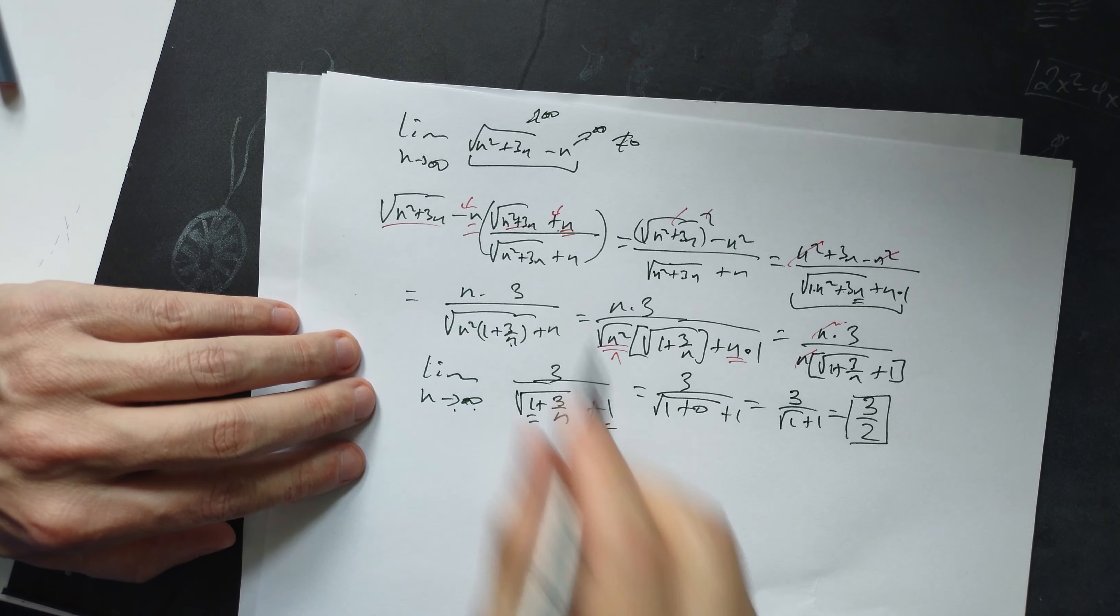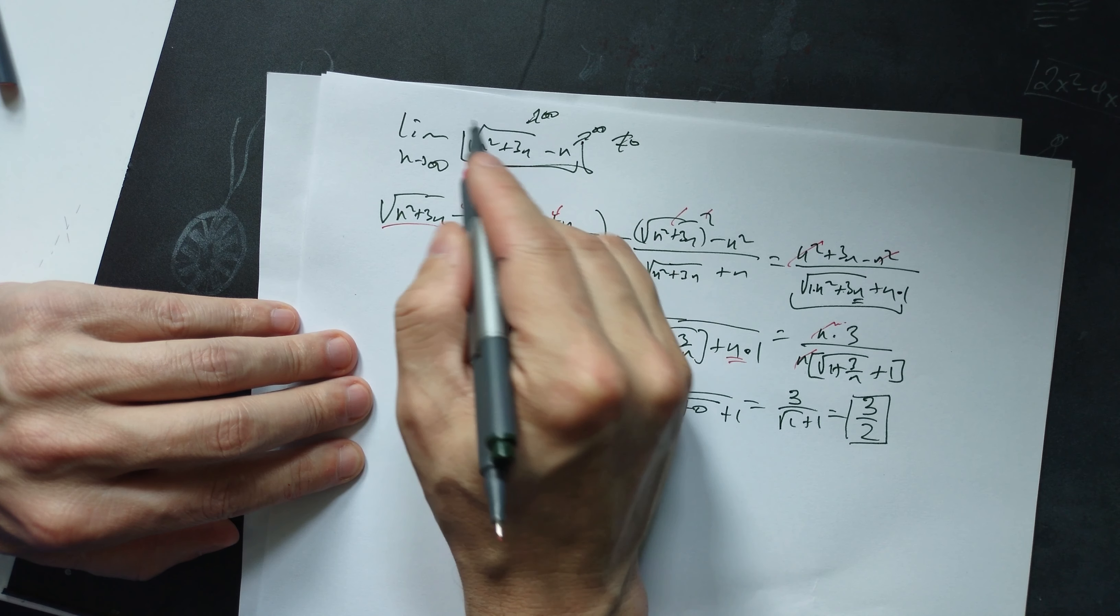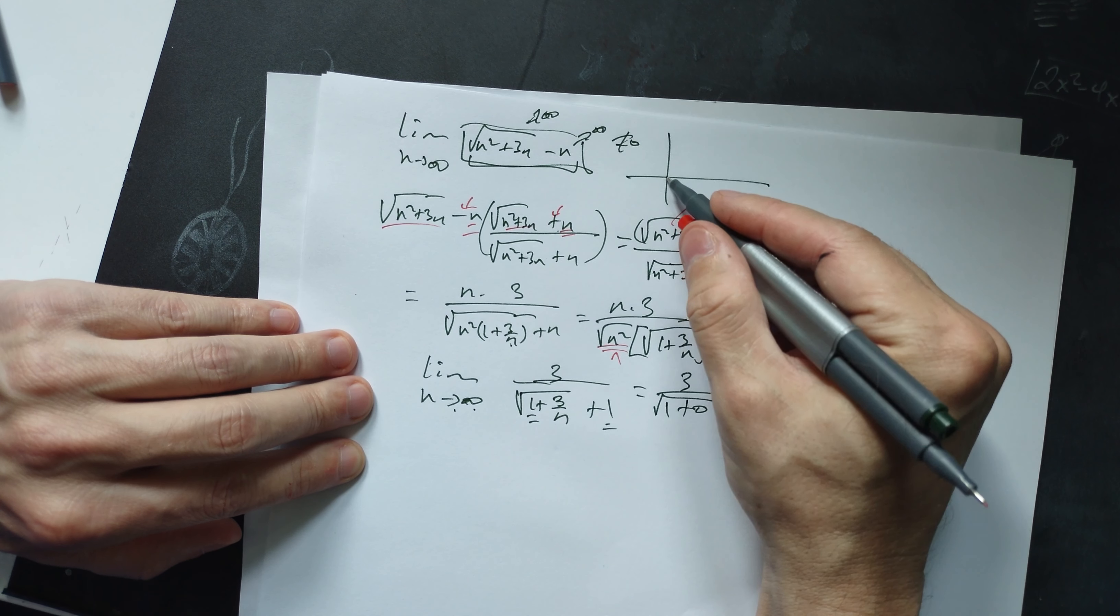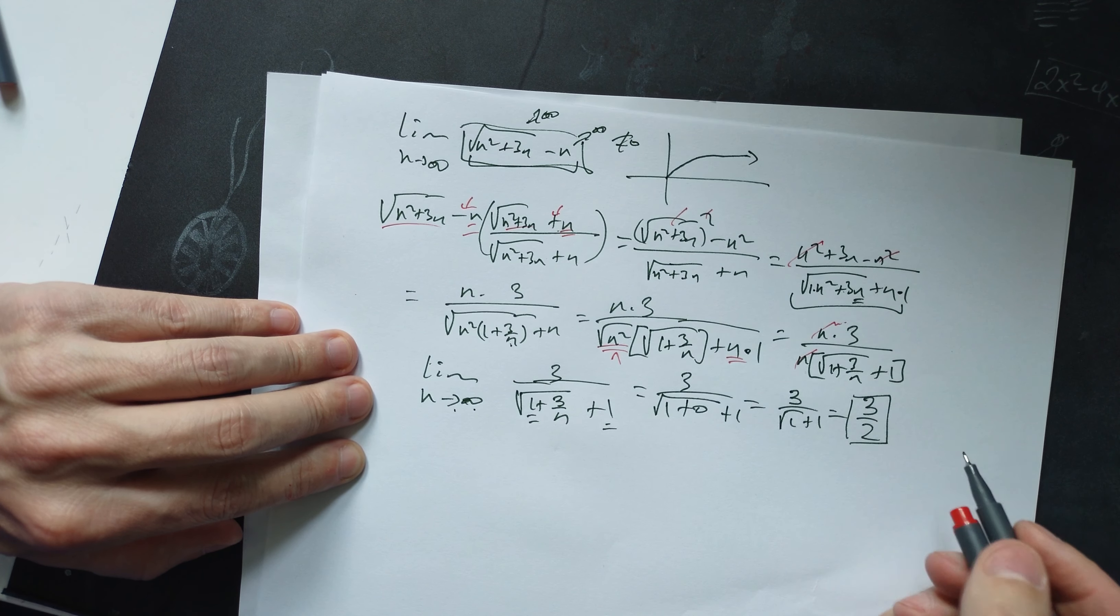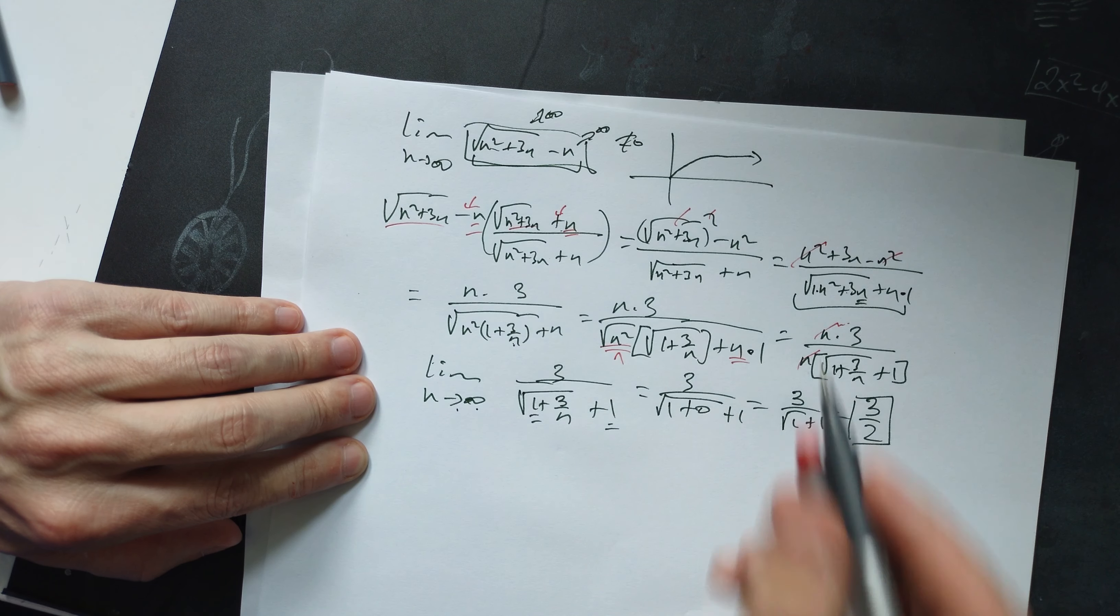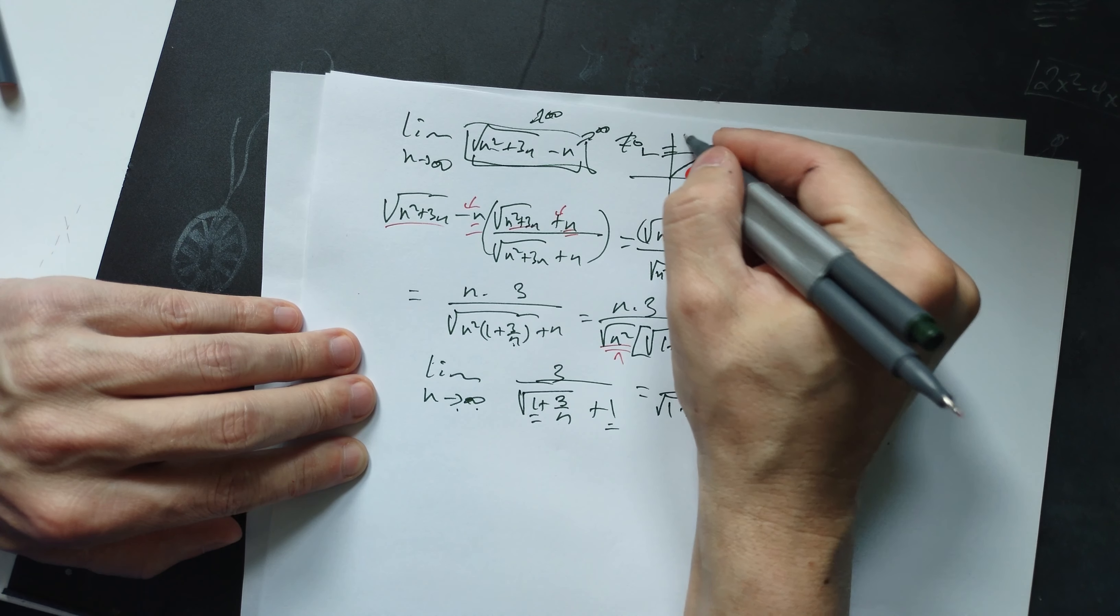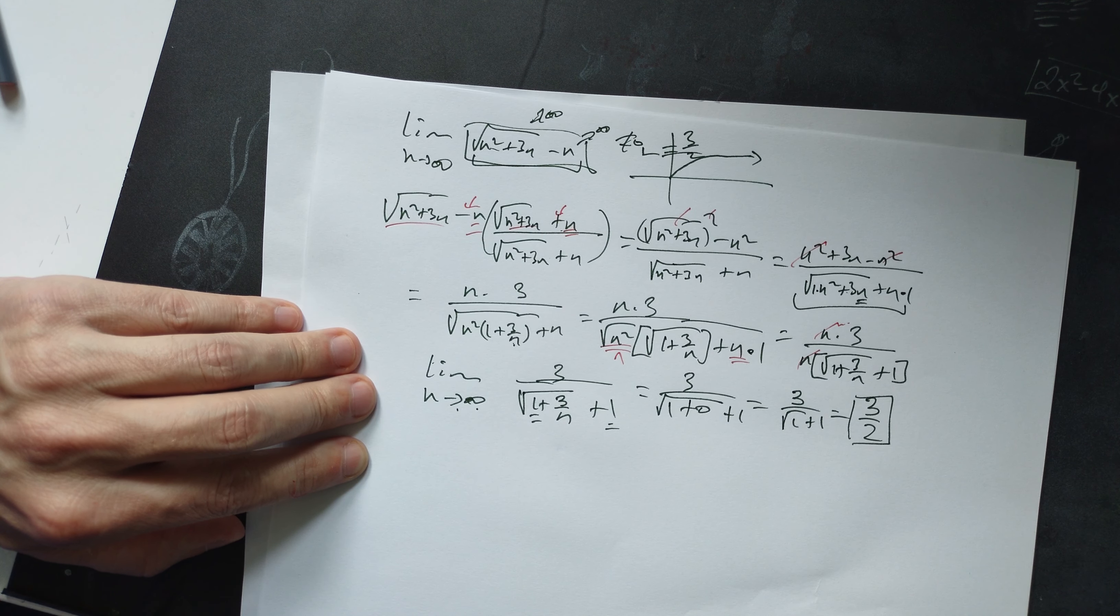If you don't believe it, graph it on a website like desmos.com. You'll see it settles down to a graph with a horizontal asymptote at 3/2. Leave a like if it's helpful.